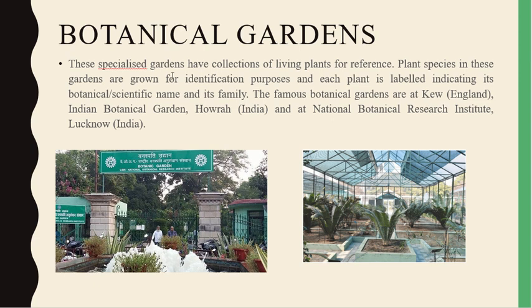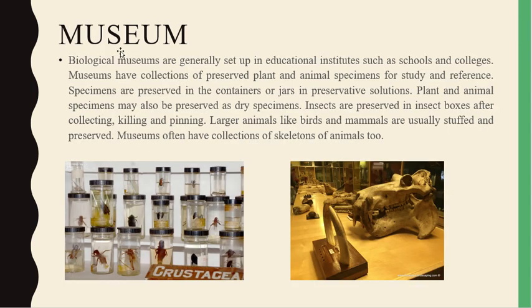The second example is botanical gardens. These specialized gardens have collections of living plants for reference. Plant species in these gardens are grown for identification purposes, and each plant is labeled indicating its botanical scientific name and its family. Famous botanical gardens are at Kew, situated in England; the Indian Botanical Garden situated in Howrah; and the National Botanical Research Institute situated in Lucknow.